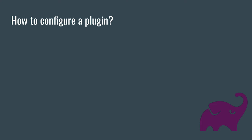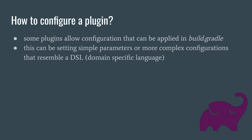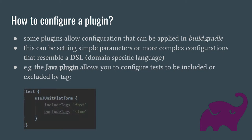So how do we configure a plugin? Well, some plugins allow configuration that can be applied in the build.gradle — this can be something pretty simple like setting a few parameters, or it can get quite complex where the plugin configuration resembles a domain-specific language. For example, the Java plugin allows you to configure tests to be included or excluded by tag.